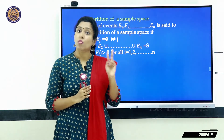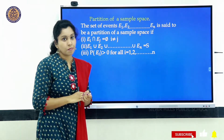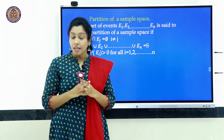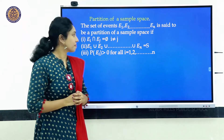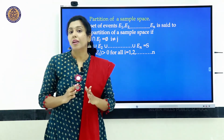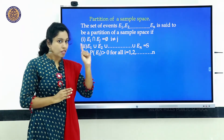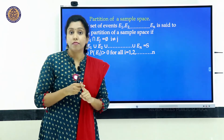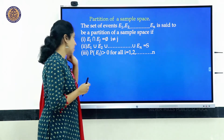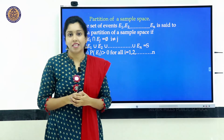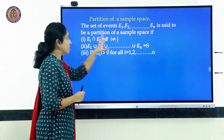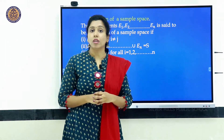The first condition is Ei ∩ Ej = φ — if you take any two events, their intersection is empty, meaning no elements are common. So they are pairwise disjoint. The second condition is that the union of all these events equals the sample space S. The third condition is that each event has a probability greater than zero — non-zero probability. Any set of events satisfying these three conditions forms a partition of the sample space.